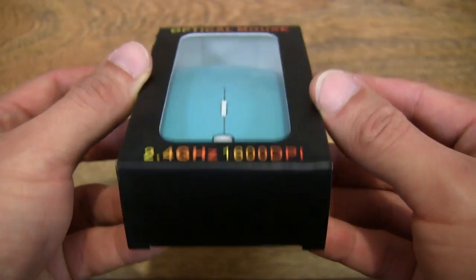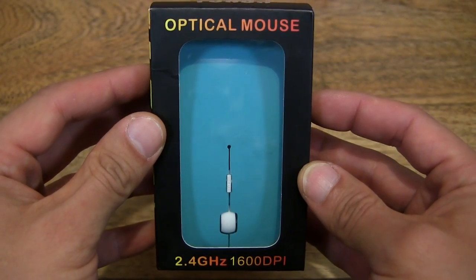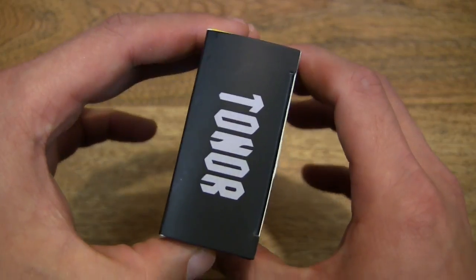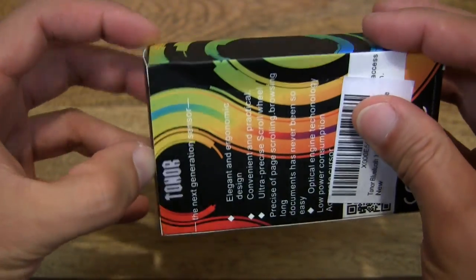So, this mouse is blue in color, it comes in three other colors which are green, pink and white. So let's go ahead and open up the box.